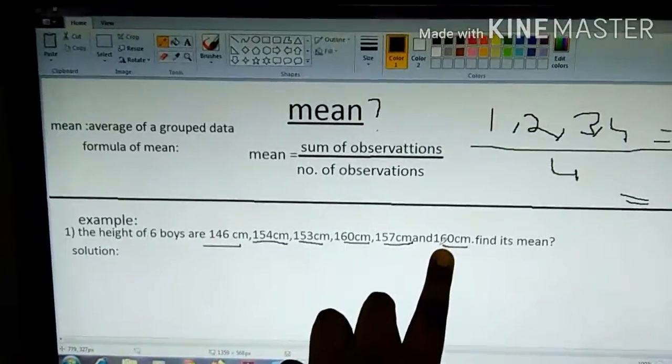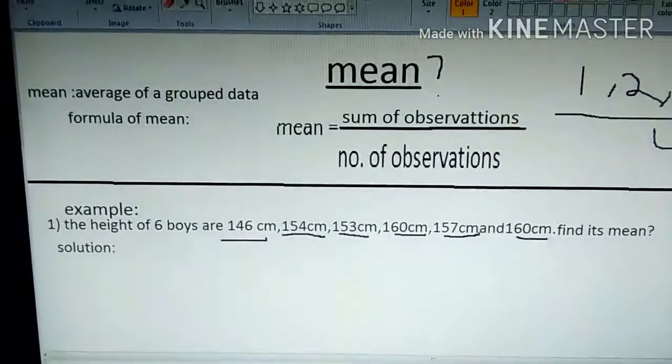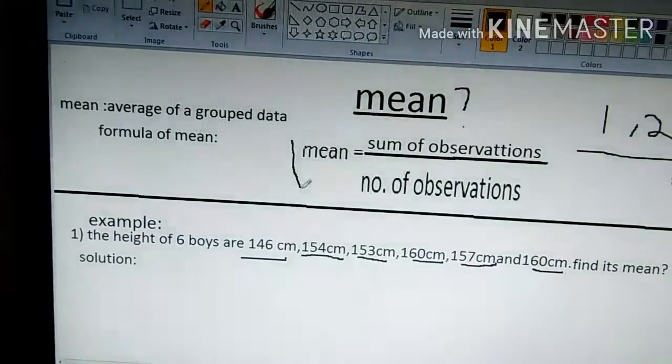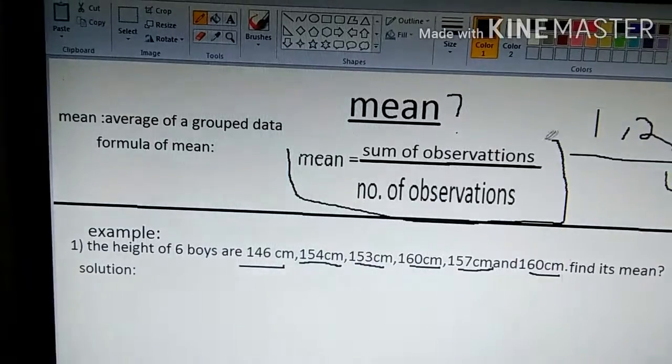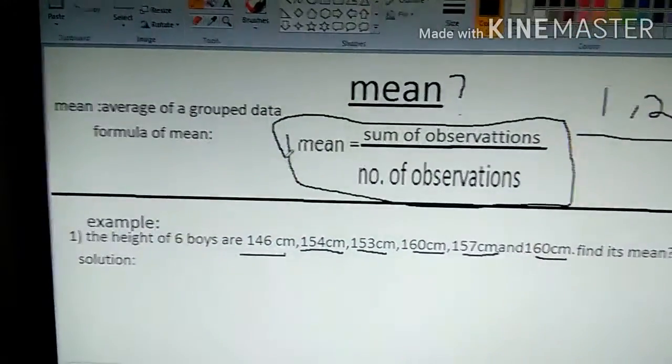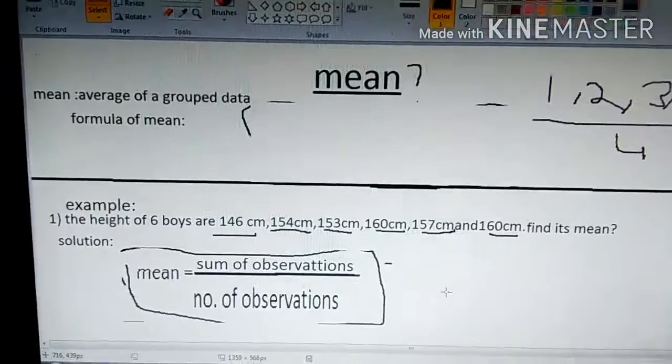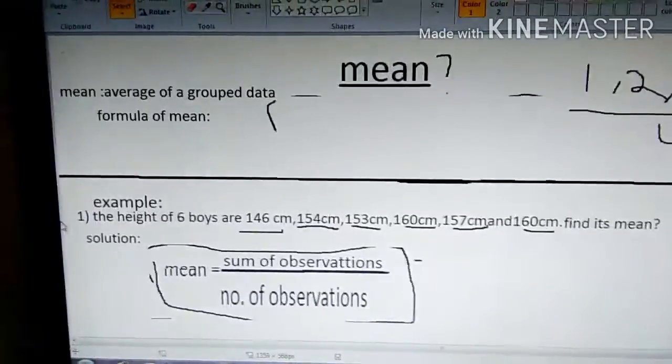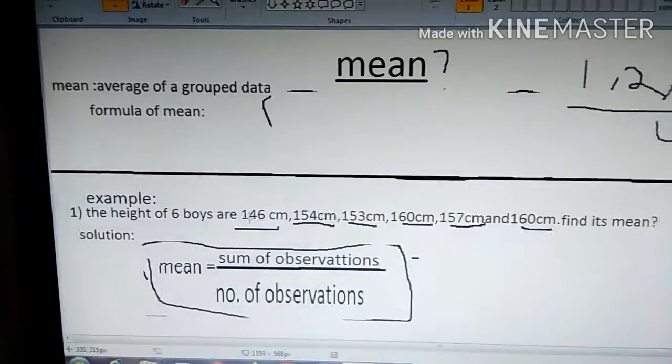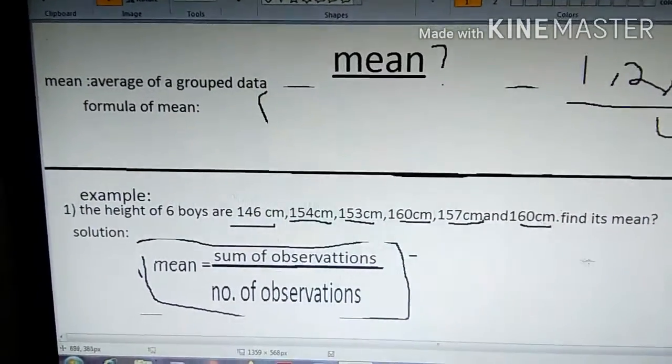Now, let us solve. First, for solving this, we need to bring the mean formula: sum of observations by number of observations. After keeping this formula, we need to write all these values here.